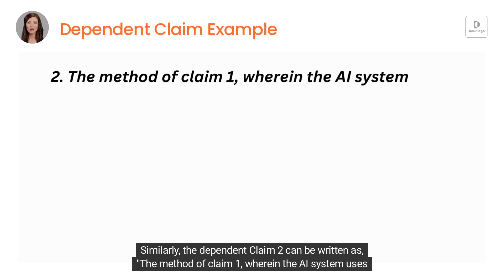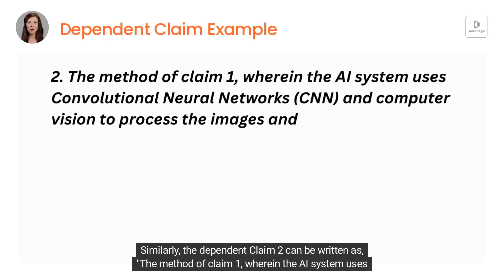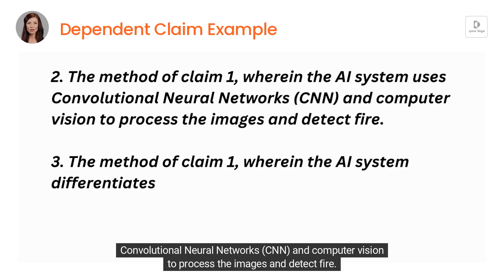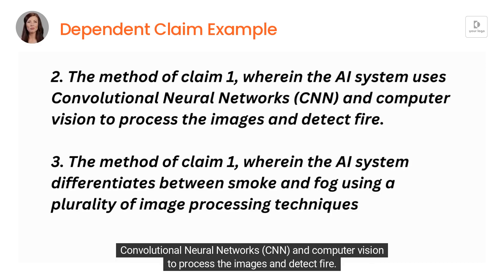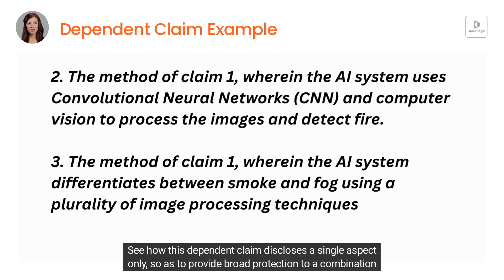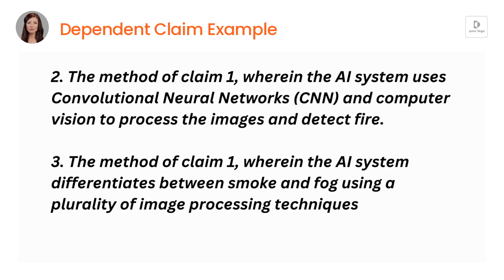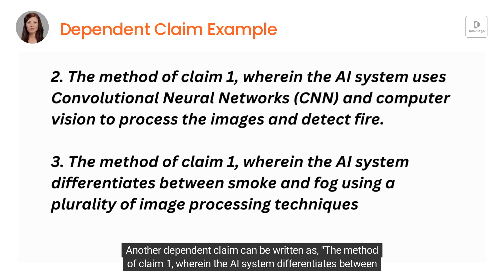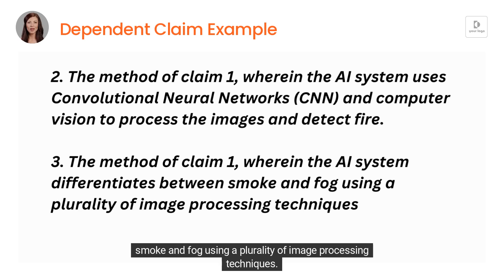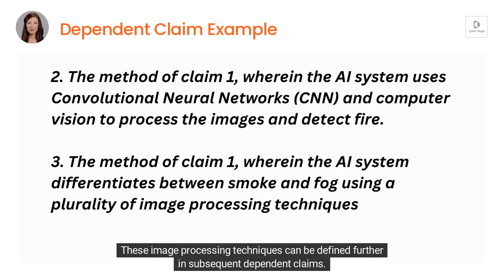Similarly, the dependent claim two can be written as: the method of claim one, wherein the AI system uses convolutional neural networks (CNN) and computer vision to process the images and detect fire. See how this dependent claim discloses a single aspect only, so as to provide broad protection to a combination of claim one and claim two. Another dependent claim can be written as: the method of claim one, wherein the AI system differentiates between smoke and fog using a plurality of image processing techniques. These image processing techniques can be defined further in subsequent dependent claims.